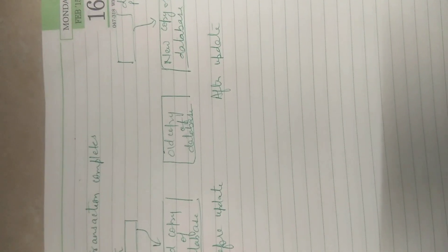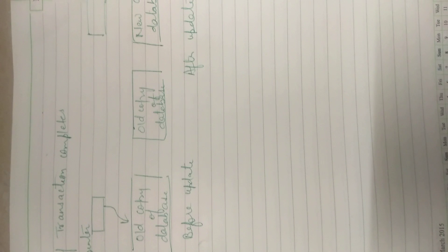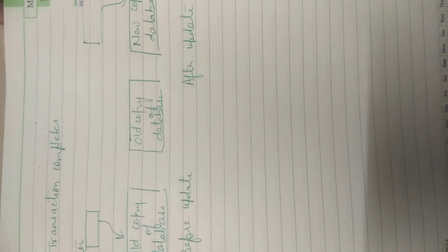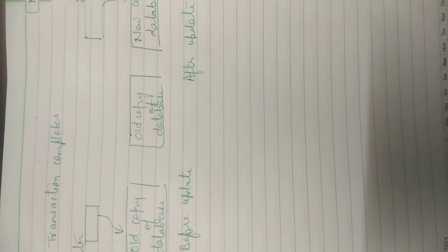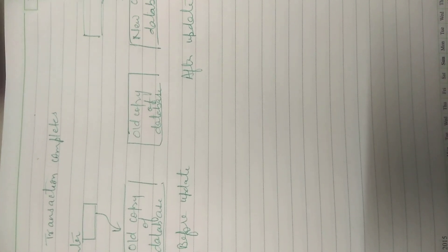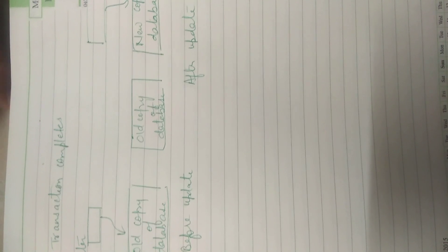If the transaction completes, it is committed as follows: the operating system writes all the pages of the new database copy to the disk, and the db pointer is made to point to the new copy of the database.